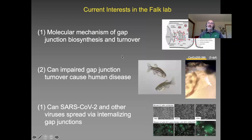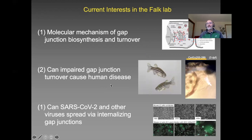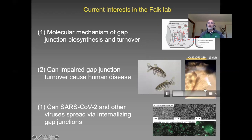Current interests in the Falk lab are threefold. We are continuing to characterize molecular mechanisms of gap junction biosynthesis and turnover, and we are doing this in cells in culture. We are also asking whether impaired gap junction turnover could cause human disease or maybe is even embryonic lethal. We are using the zebrafish model system to address this question — it's an ideal system because of the transparency of the embryos that allows us to investigate this question.